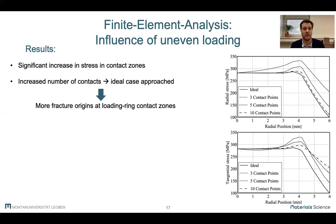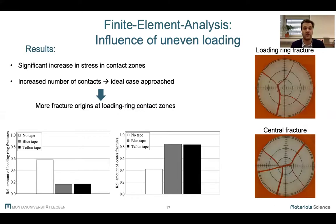And after doing a lot of fractography, we found a significant difference in positions of the fracture origins. We can see here that if no layer is used, the number of fracture origins in the center regions decrease and they can instead be found in or close to the contact zones. Once again, we can see that there's hardly any difference in statistics between the samples tested with blue tape or the Teflon tape. The typical center fracture looks like this, whereas loading ring fractures in the contact zones look like this.